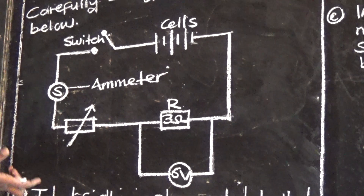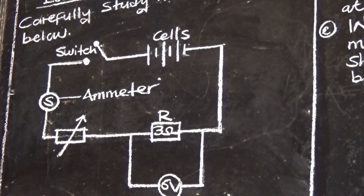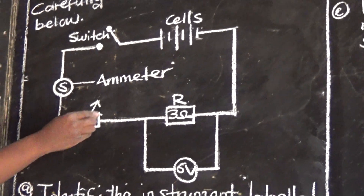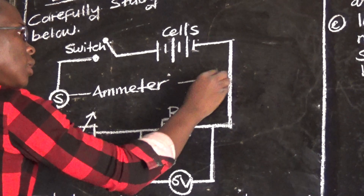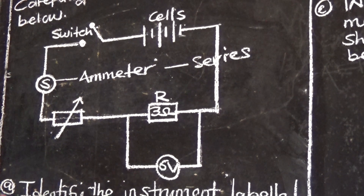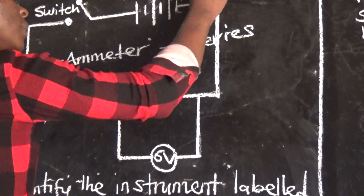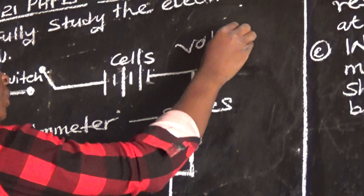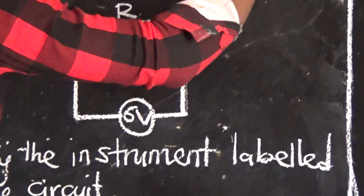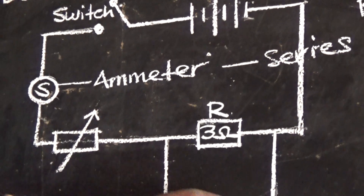How to identify an ammeter — how to differentiate the position of an ammeter from a voltmeter. An ammeter is always connected in series. This other one is a voltmeter. The voltmeter is connected in parallel. So this is our ammeter, and this is our voltmeter.